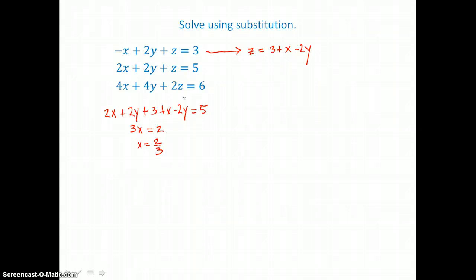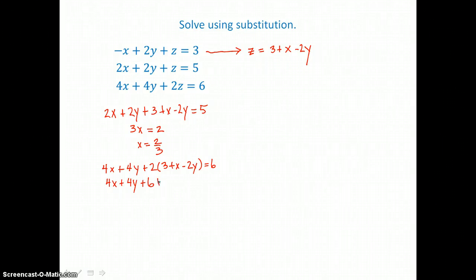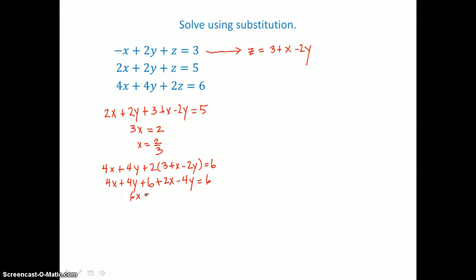Now I'll substitute into the third equation for z. I have 4x plus 4y plus 2z, and in for z I put 3 plus x minus 2y, equals 6. Distributing: 2 times 3 is 6, 2 times x is 2x, 2 times negative 2y is negative 4y. Adding like terms: 4x and 2x is 6x, and 4y and negative 4y is 0. Subtracting 6 from both sides, 6 minus 6 is 0. Dividing both sides by 6, x is equal to 0.